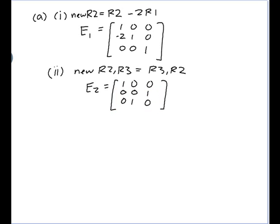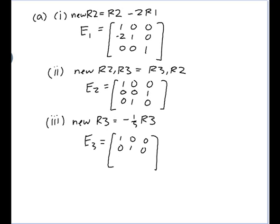Part 3: multiply row 3 by minus 1/5. So the new row 3 is minus 1/5 of the old row 3. I apply that to the 3 by 3 identity. Row 3 becomes: minus 1/5 of 0 is 0, minus 1/5 of 0 is 0, minus 1/5 of 1 is minus 1/5. So that's the elementary matrix E3. I've now found all three elementary matrices.